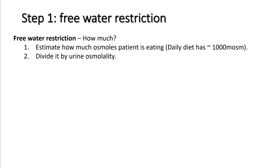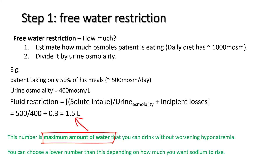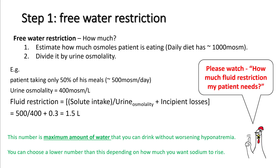To calculate how much free water restriction is needed, divide the patient's daily solute intake by their urine osmolality. A normal daily diet has around 1000 mOsm. If the patient is eating only 50% of meals, that is about 500 mOsm per day. If urine osmolality is 400, the fluid limit is 500 ÷ 400 plus insensible losses of 0.3, equaling 1.5 liters — the maximum intake without worsening hyponatremia.